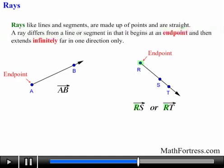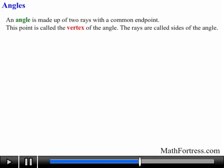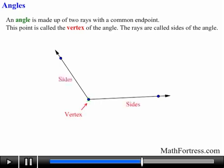Now that we know about points, lines, segments, and rays, we can now talk about angles. In essence, an angle is made up of two rays with a common endpoint. This point is called the vertex of the angle. The rays are called sides of the angle.